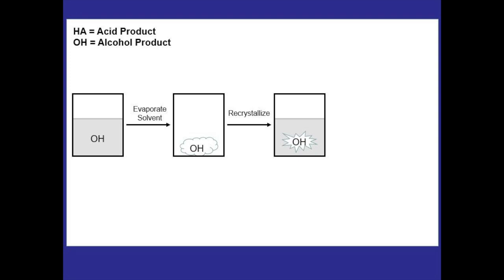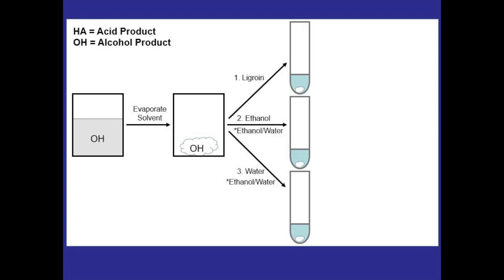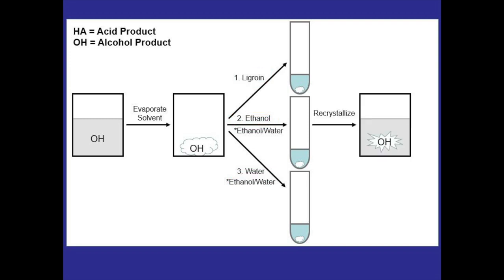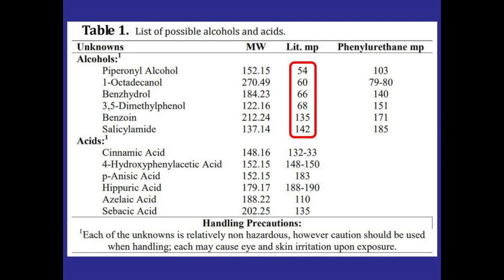After evaporation, recrystallize the crude alcohol to characterize pure crystals and get an accurate melting point range. Since we don't know which alcohol we have, we don't know the best recrystallization solvent. We've used ligroin, ethanol, water, or an ethanol-water mixture. Ligroin was used in the Cannizzaro lab, so it's generally a safer choice. To be sure, separate a small portion of crude product into three test tubes and test each solvent, then use whichever works best for the remaining crude alcohol.